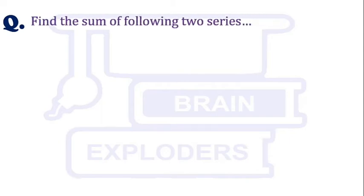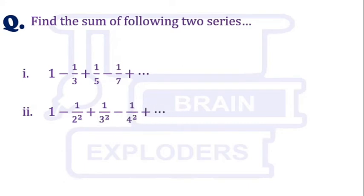Find the sum of the following two series: 1 - 1/3 + 1/5 and so on, and the second series is 1 - 1/2² + 1/3² and so on.